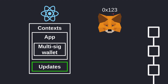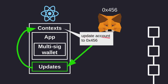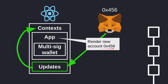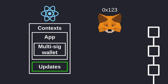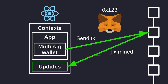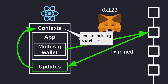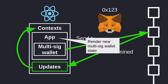For example, let's say our current MetaMask account is 123 and then we change it to 456. The Update component will detect the change made to MetaMask and then change the account stored in context to 456, and inside app we'll render the new account 456. As another example, if we send a transaction and it gets mined, the Update component will detect the change, update the state of the multisig wallet stored in context, and then the new state will be rendered in app.